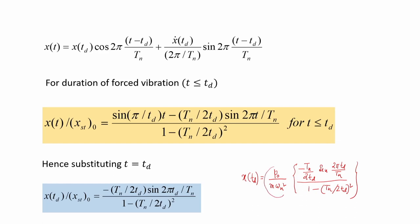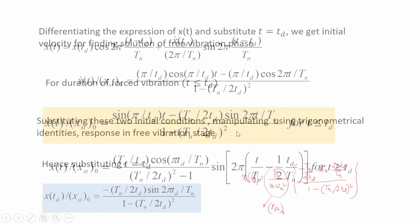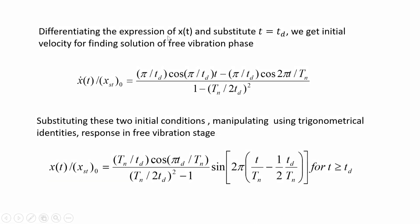The displacement ratio x(t)/x_st0 = (T_n/t_d)·cos(πt_d/T_n) / [(T_n/2t_d)² − 1] · sin[2π(t/T_n − t_d/(2T_n))], valid for t ≥ t_d. This is the free vibration response subjected to initial conditions x(t_d) and ẋ(t_d). We now need to obtain the maximum response in both the forced and free vibration phases.